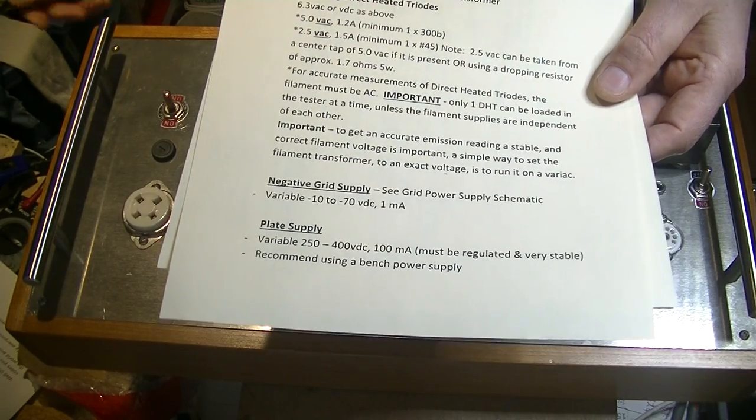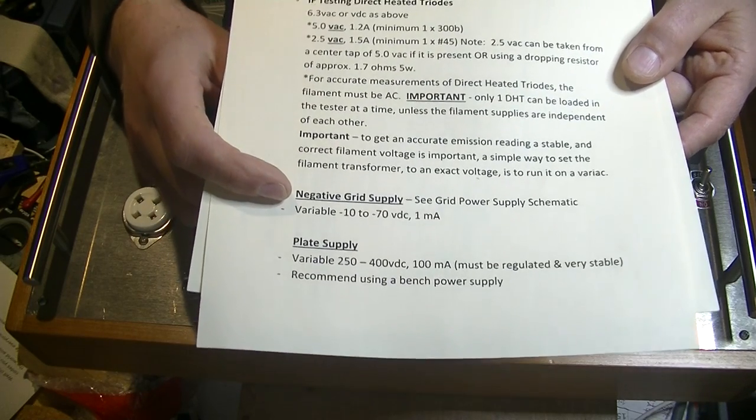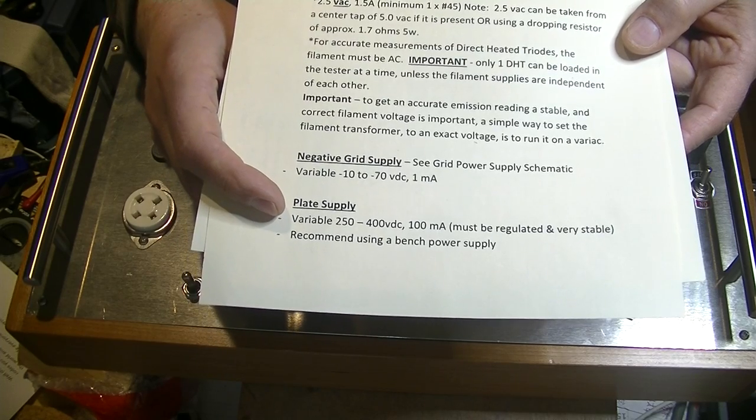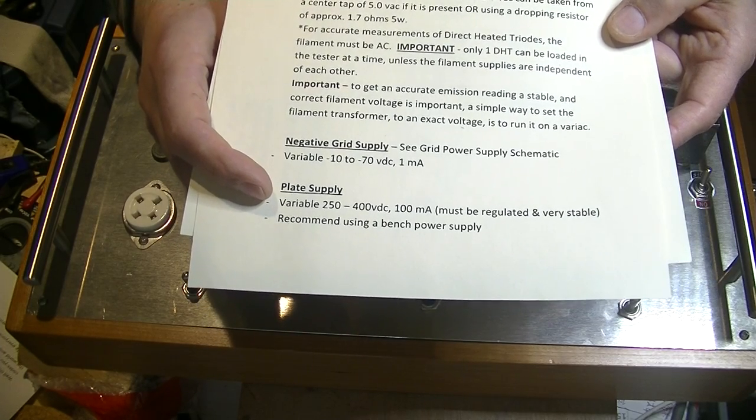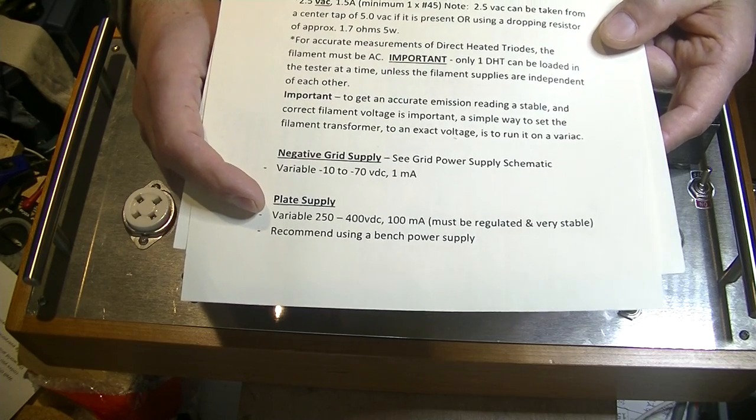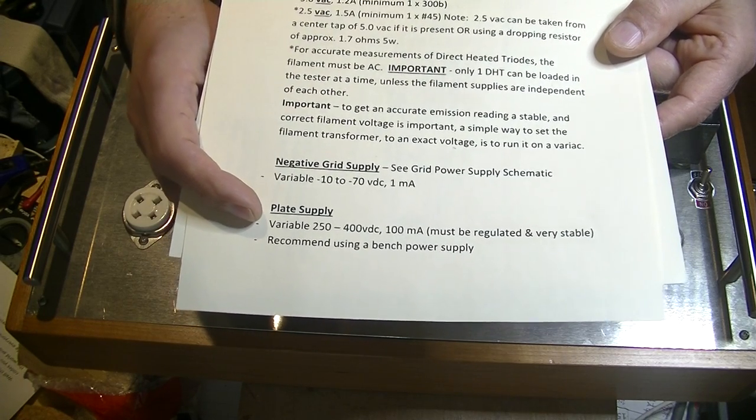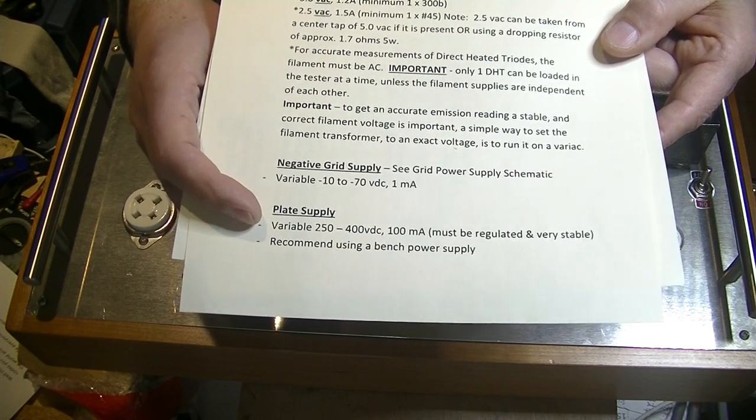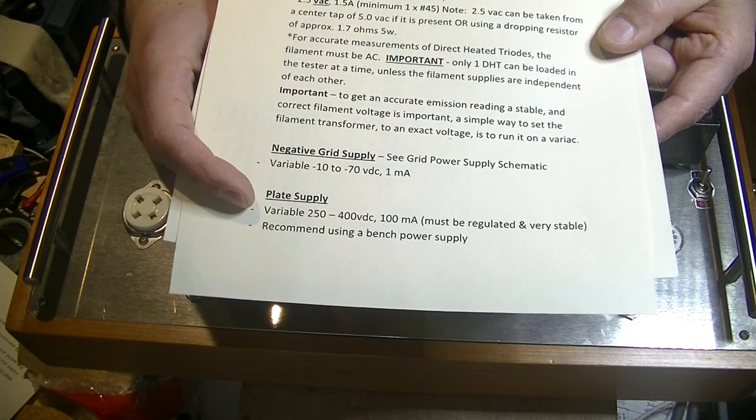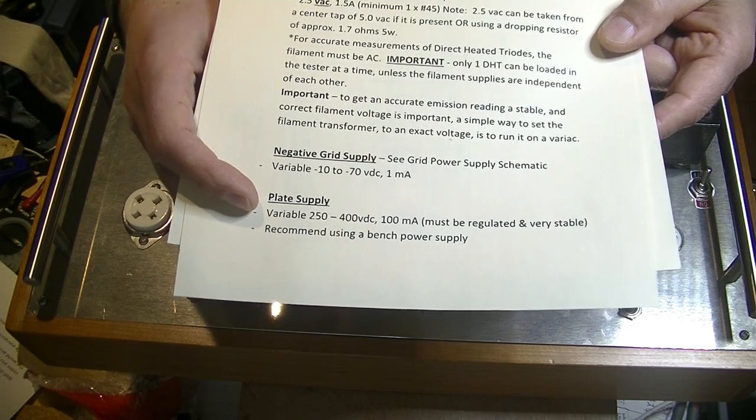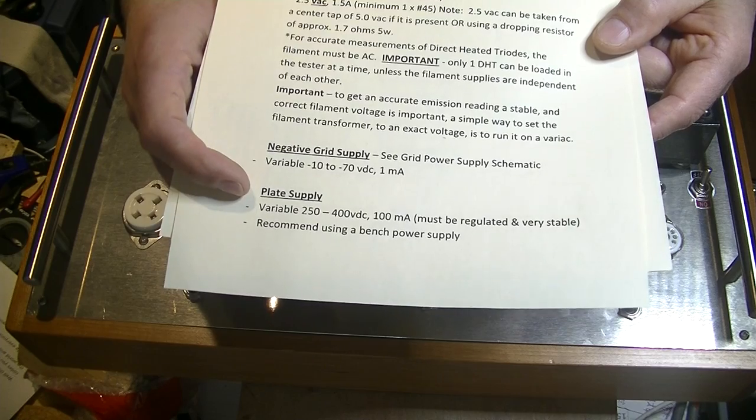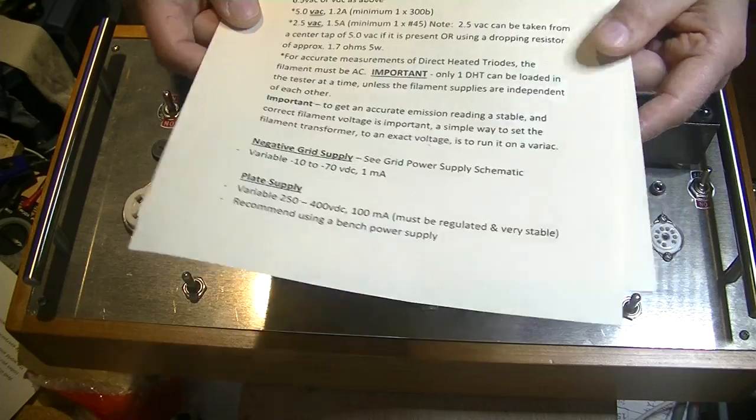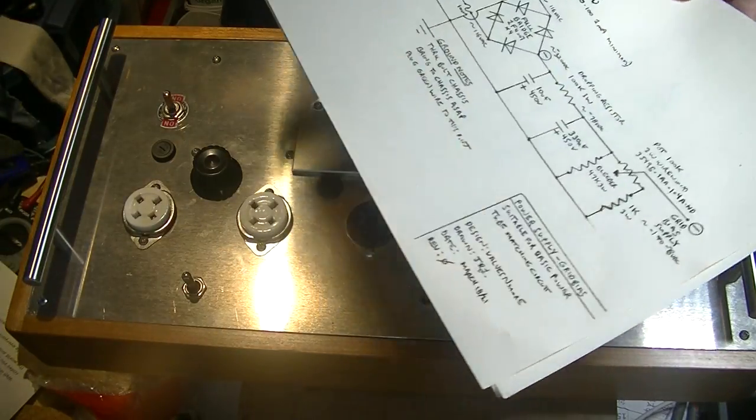You're going to need a negative grid supply, and we're going to look at that schematic in a minute. And you're going to need a very robust plate supply. And what I suggest you do is you just put it on a bench power supply. I have two large ones. I have a Fluke which I absolutely love. And the plate supply is absolutely rock-solid steady when I run it on the Fluke. I have a backup HP. And I think this is the simplest and the best way to do it.